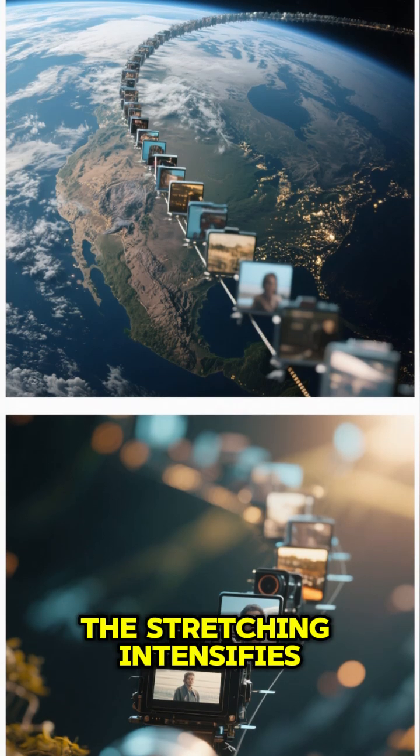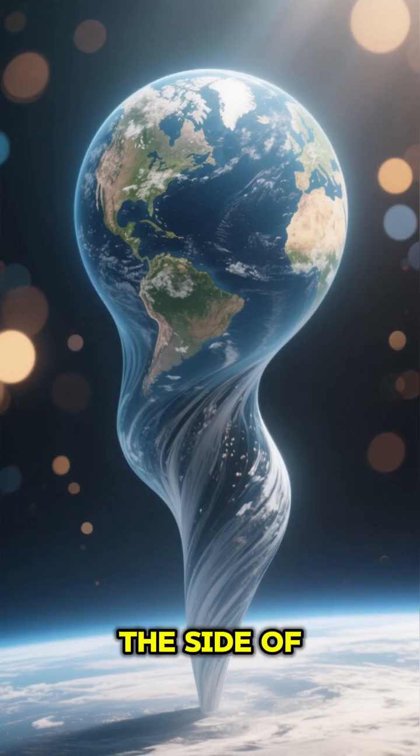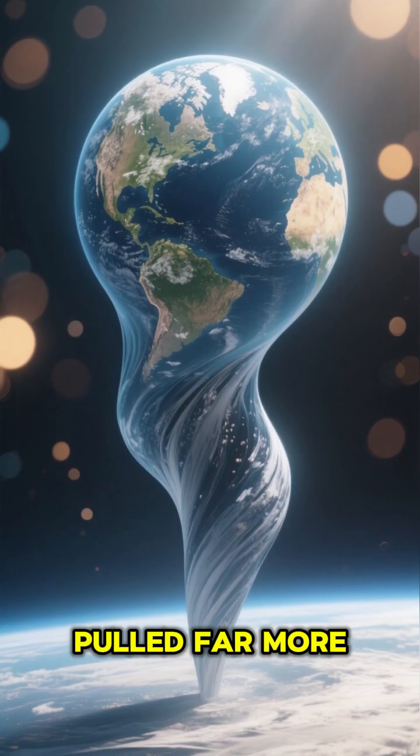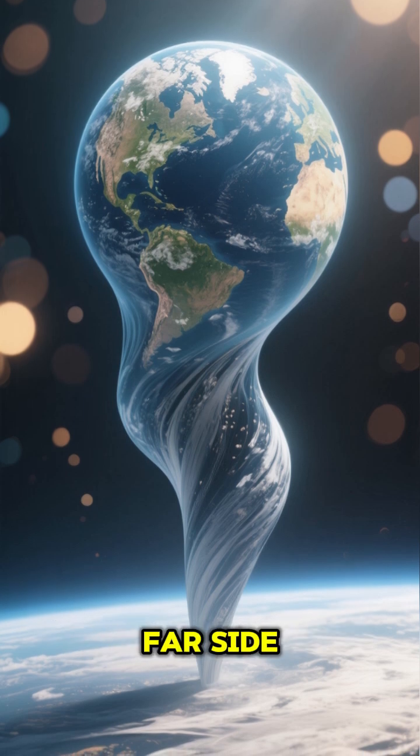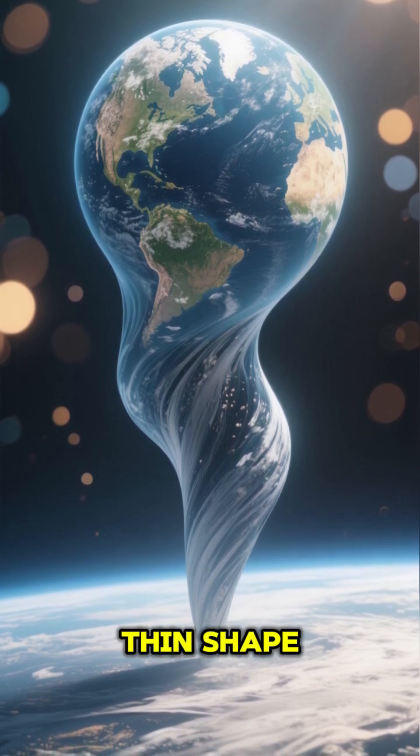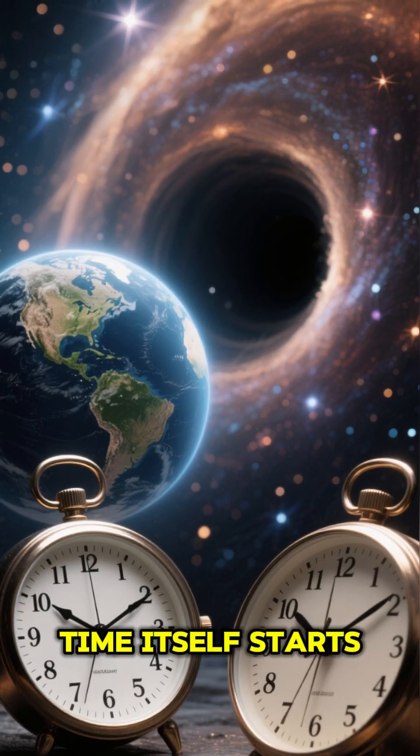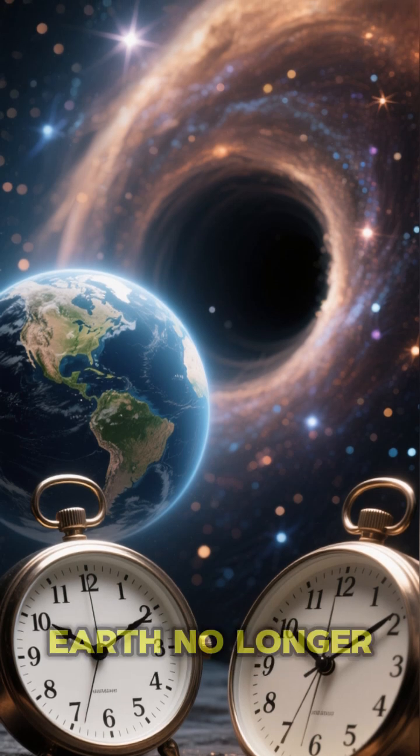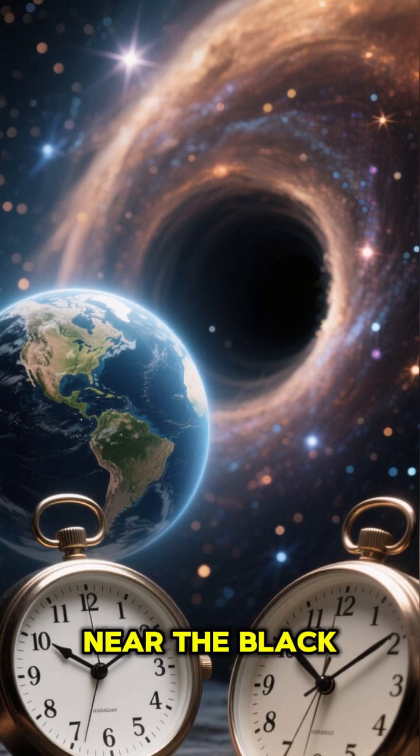By the second second, the stretching intensifies. The side of Earth closer to the black hole is pulled far more strongly than the far side, distorting the planet into a long, thin shape. Time itself starts behaving differently. Seconds on Earth no longer match seconds near the black hole.